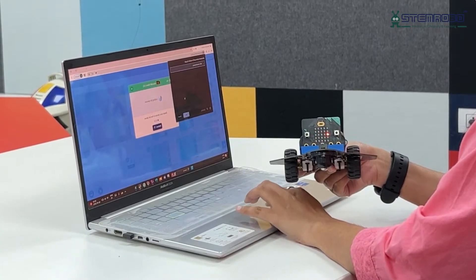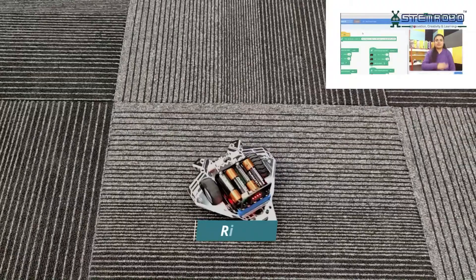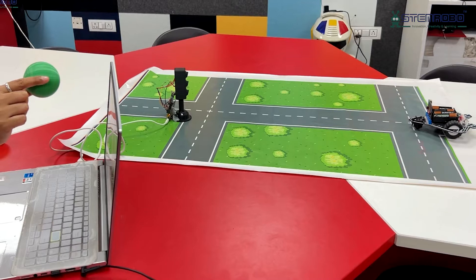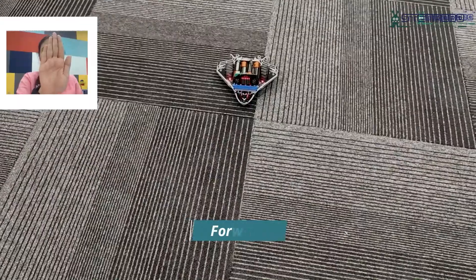The transformative STEM Bot kit takes learning further with graphical coding, offering 100-plus projects and captivating ML AI experiences like voice control and gesture-detecting robots.